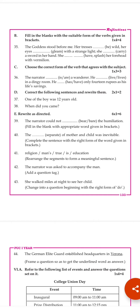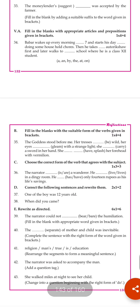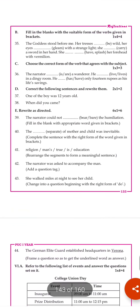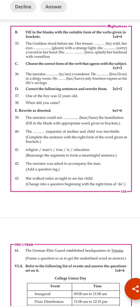The next question is question 35. The instruction is the same: fill in the blanks with the suitable form of the verbs given in brackets. Question 35 also comes from one of your lessons — 'The Watchman of the Lake.' 'The goddess stood before me.' Her tresses 'be' — becomes 'were' — wild. Her eyes 'gleam' — becomes 'gleamed.'